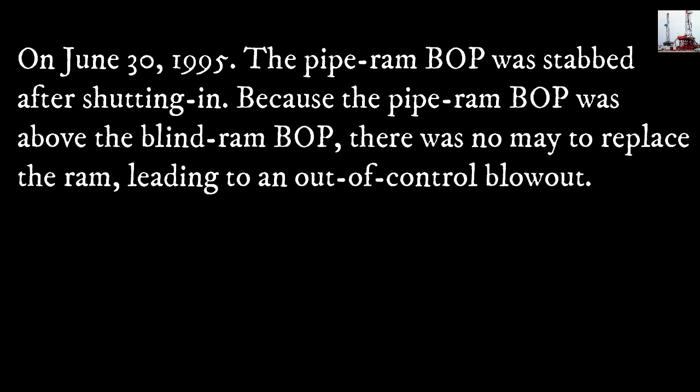In 1995, the pipe ram blowout preventer was stabbed after shutting in, because the pipe ram blowout preventer was above the prime ram blowout preventer. There was no way to replace the ram, leading to an out-of-control blowout.